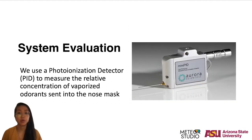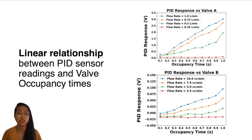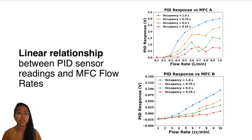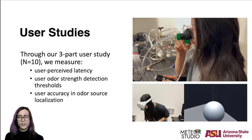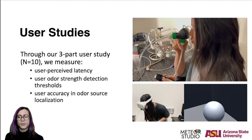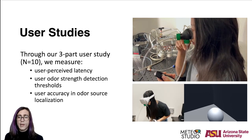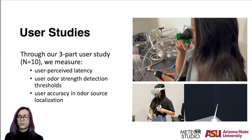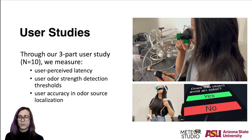To evaluate our system, we use a photoionization detector to measure the relative concentration of vaporized odorants sent into the nose mask. Through our system measurements, we observed a linear relationship between PID sensor readings and valve occupancy times. Additionally, we observed a linear relationship between PID sensor readings and mass flow controller flow rates. For the user studies, we determined the system's timeliness of odor delivery, the system's ability to help identify a user's olfactory detection thresholds, and the system's ability to help improve user localization of odor sources in a virtual environment.